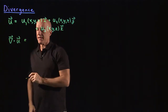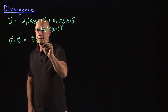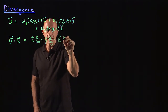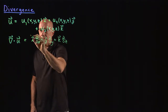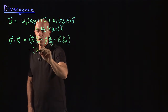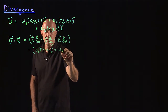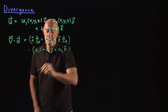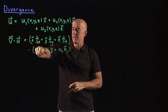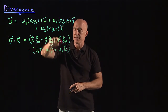What does this look like? Del is the operator i ∂/∂x plus j ∂/∂y plus k ∂/∂z, dotted into u1 i plus u2 j plus u3 k. Only the i dot i, j dot j, and k dot k terms contribute.